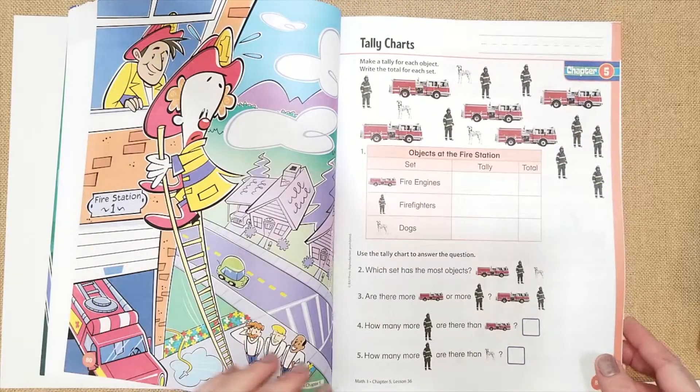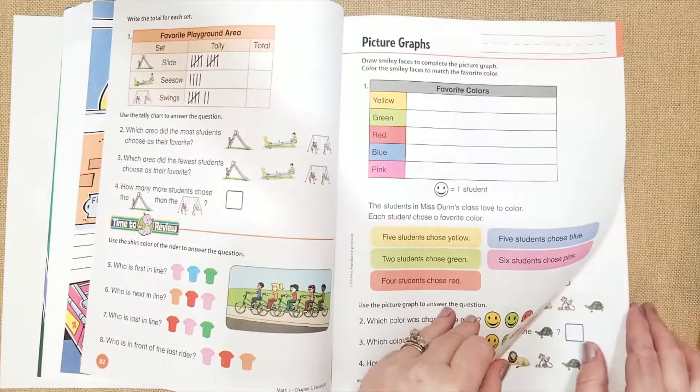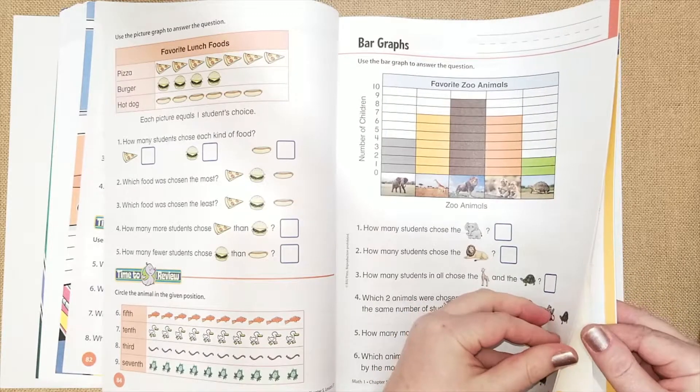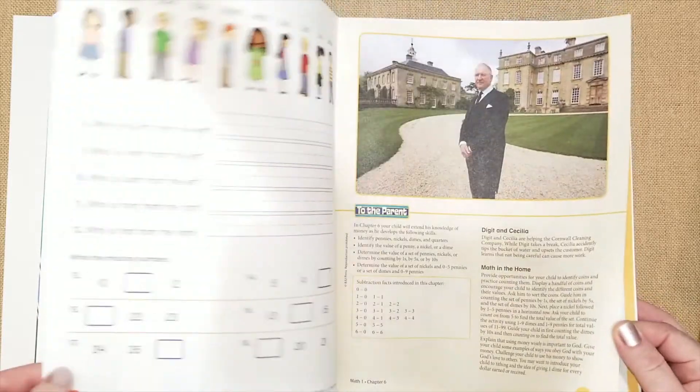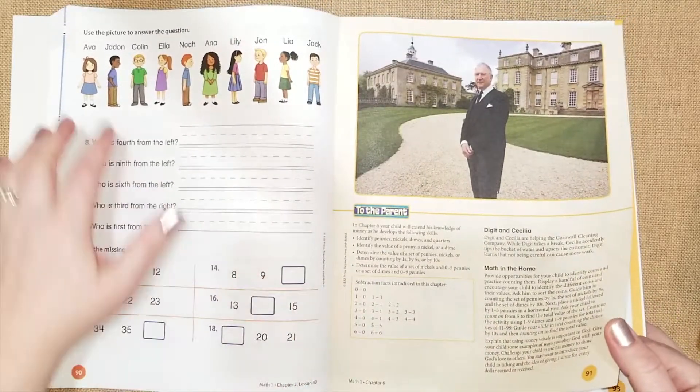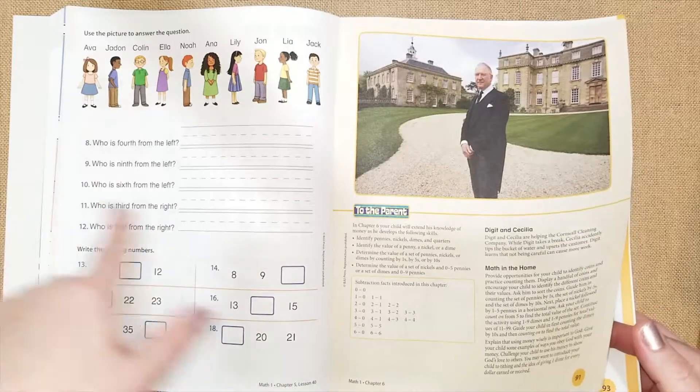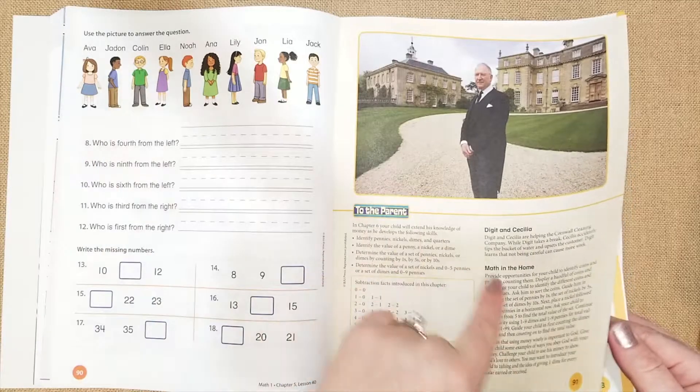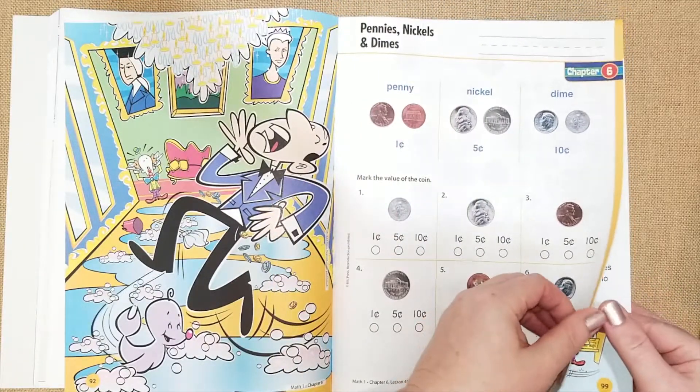Chapter five, they're doing tally charts, which I think is super fun for her. We talked about tallies several times this year and it'll be nice for her to see if she has remembered everything, putting them in the ordinal numbers, who's fourth, who's ninth. And they're going to be asking left and right. So they're going to have to understand which one's left, which one's the right side.